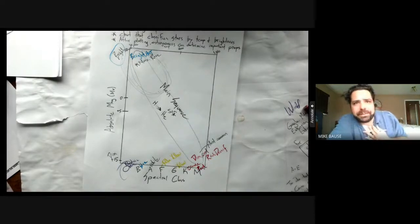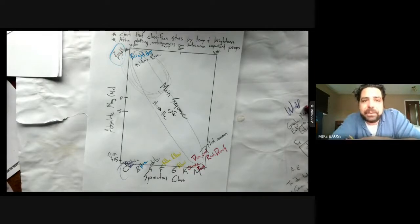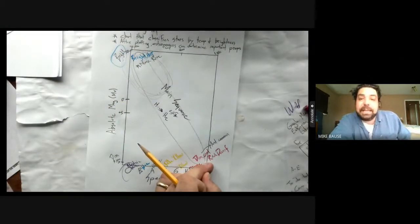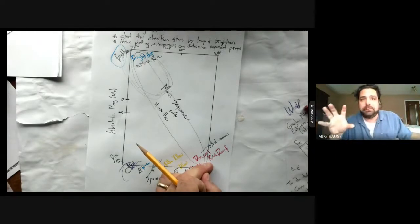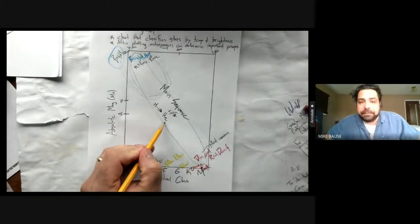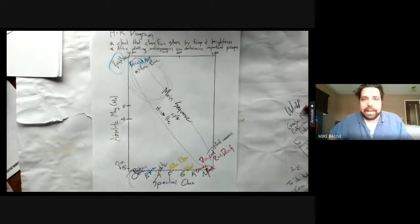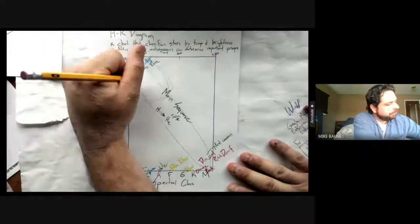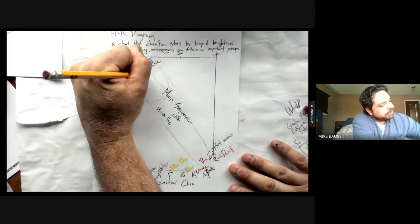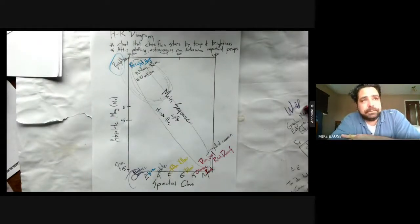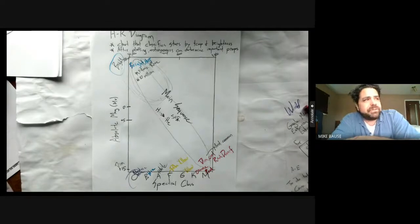Another surprising statistic about these main sequence stars, stars from the top left down to the bottom right: the length of time that they live. And when I say a star lives, that means it's fusing, it's producing energy through fusion. Main sequence stars fuse hydrogen into helium. Well, here's what happens: the really big, really hot blue stars, they only fuse hydrogen for a few million years. I'm going to say 10 million years, that's their average lifespan.